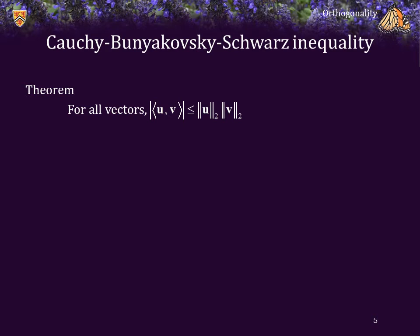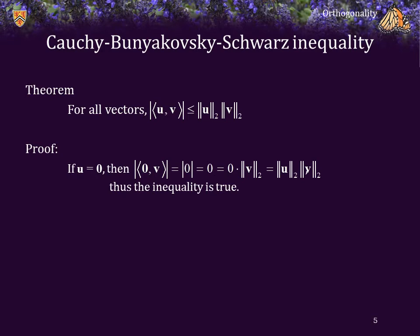Let's prove the Cauchy-Bunyakovsky-Schwarz inequality, which says that for all vectors u and v, this inequality holds. First of all, let's check the case when u is the zero vector. If u is the zero vector, then the inner product between u and any vector v is zero, and the absolute value of zero equals zero. That is equal to the product of the two norms of u and v, for the two-norm of the zero vector is zero, and zero multiplied by anything is zero. Thus, equality holds, and therefore so does the inequality.